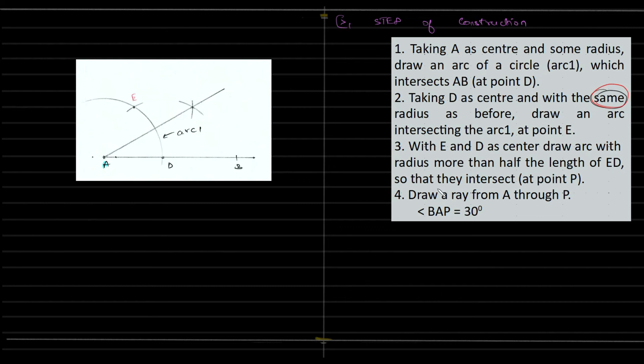With E and D as center, draw arcs with radius more than half the length of ED, so more than half of this. Draw two arcs like this so they intersect at point P, and PAB will give you 30 degrees.